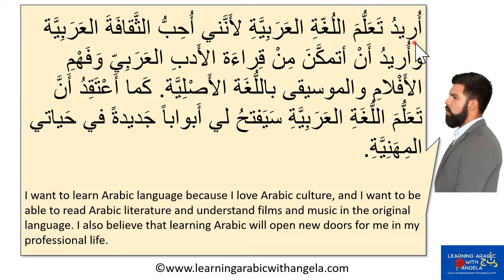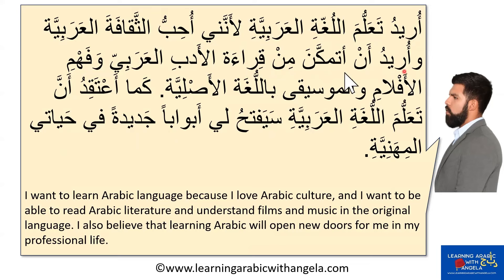I want to learn Arabic language: أريد تعلم اللغة العربية لأنني أحب الثقافة العربية — because I love Arabic culture. عادات are traditions; ثقافة is culture. وأريد أن أتمكن من — and I want to be able to. أتمكن من is followed by a noun. For example: أريد أن أتمكن من السباحة — I want to be able to swim. أريد أن أتمكن من السفر — I want to be able to travel. After من there must be a noun.